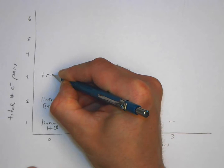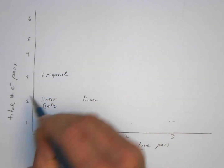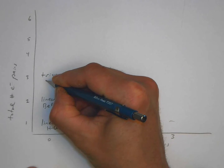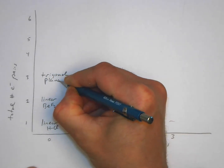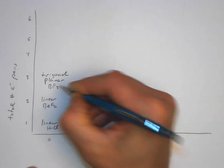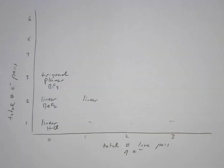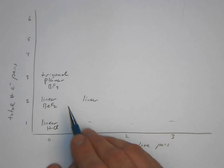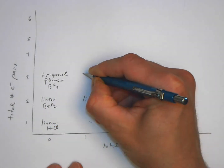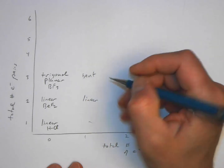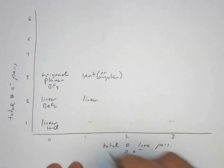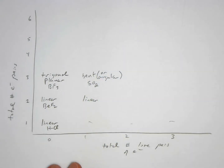When we have three pairs of electrons around the central atom and zero lone pairs, we would have a trigonal planar geometry. We saw an example with BF3 or BCl3. If we remove one bonding pair and replace it with a lone pair, we'd end up with a bent or angular structure.